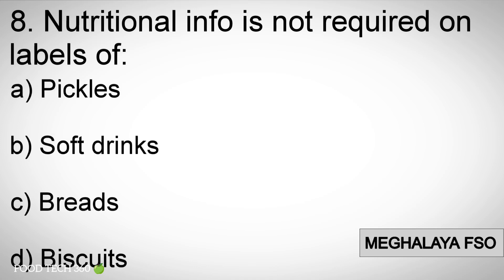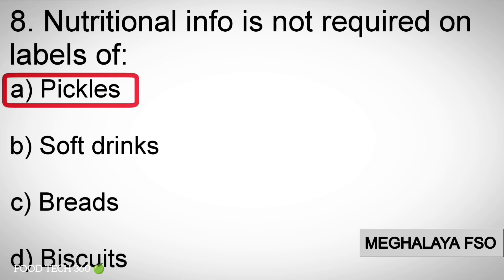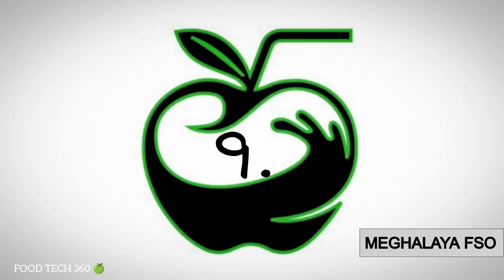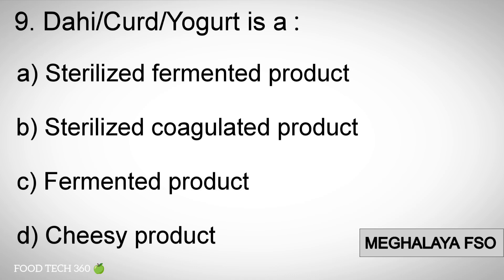Question number 8: Nutritional additional information is not required on labels of — options: A) pickles, B) soft drinks, C) breads, D) biscuits. Correct answer: A) pickles. Question number 9: Dahi or curd or yogurt is a — options: A) sterilized fermented product, B) sterilized coagulated product, C) fermented product, D) other.